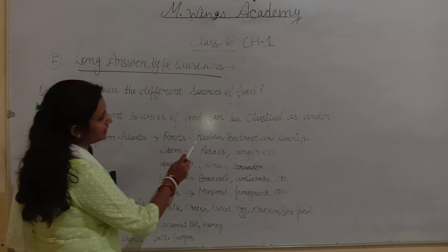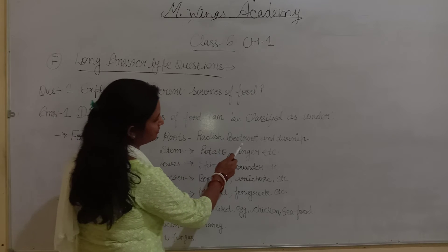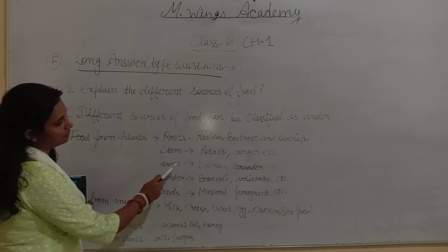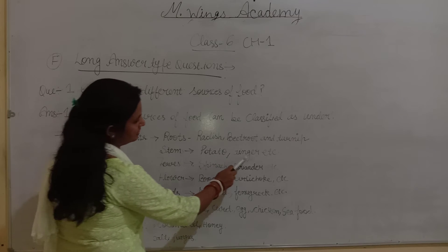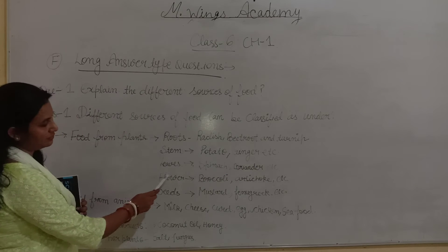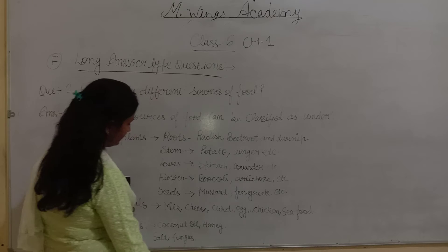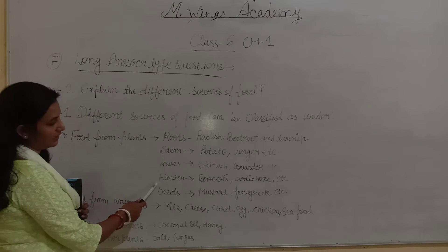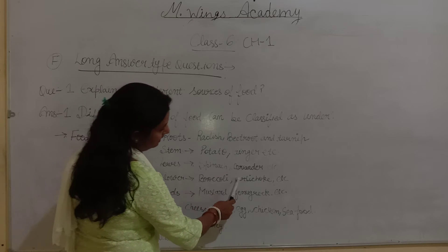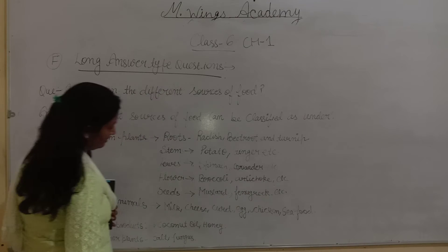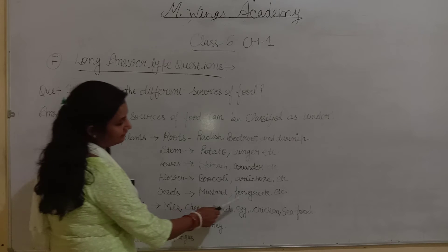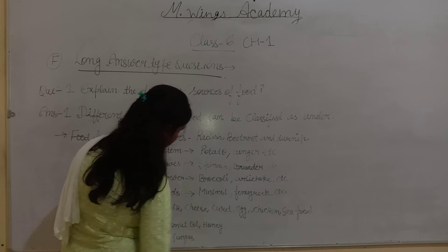What do you write under roots? Radish, beetroot and turnip. You will write potato, ginger, etc. Under leaves, you will write spinach, coriander, etc. Under flowers, you will write broccoli, artichoke, etc. Under seeds, you will write mustard, fenugreek, etc.